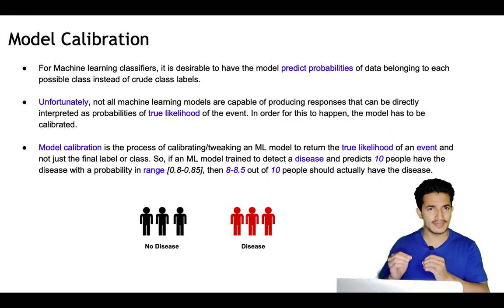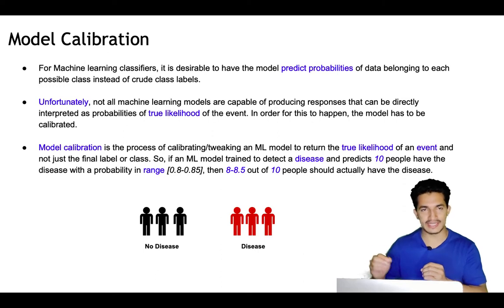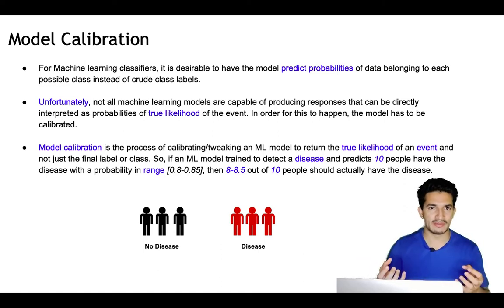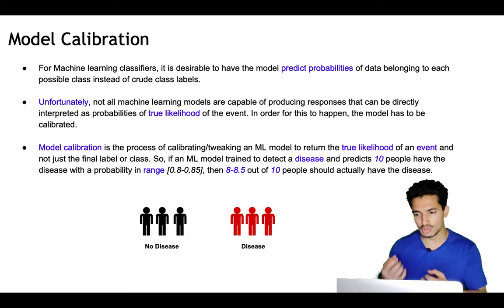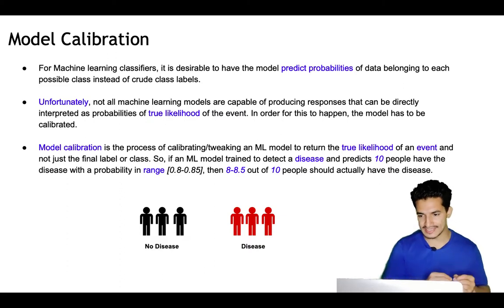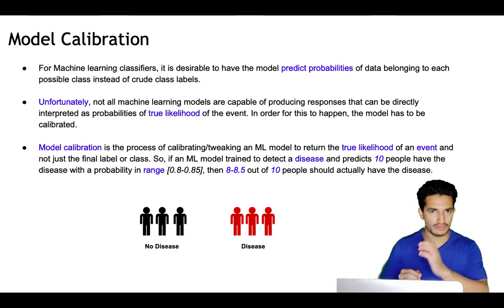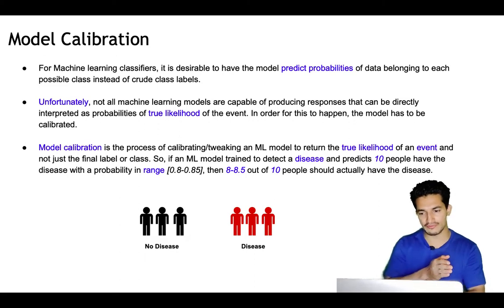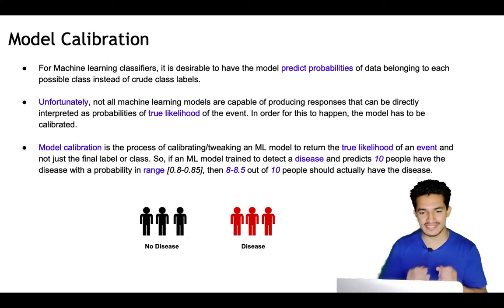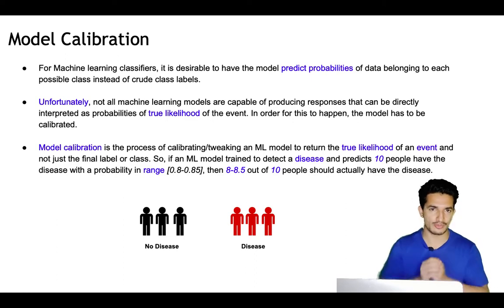Machine learning model calibration is the process of calibrating or tweaking the ML probabilities so they are not just bare numbers but the true likelihood of an event. For example, if an ML model has been trained to detect a disease and it predicts 10 people to have the disease in the probability range of 0.8 to 0.85, then out of 100 people, 80 to 85 should actually have the disease.